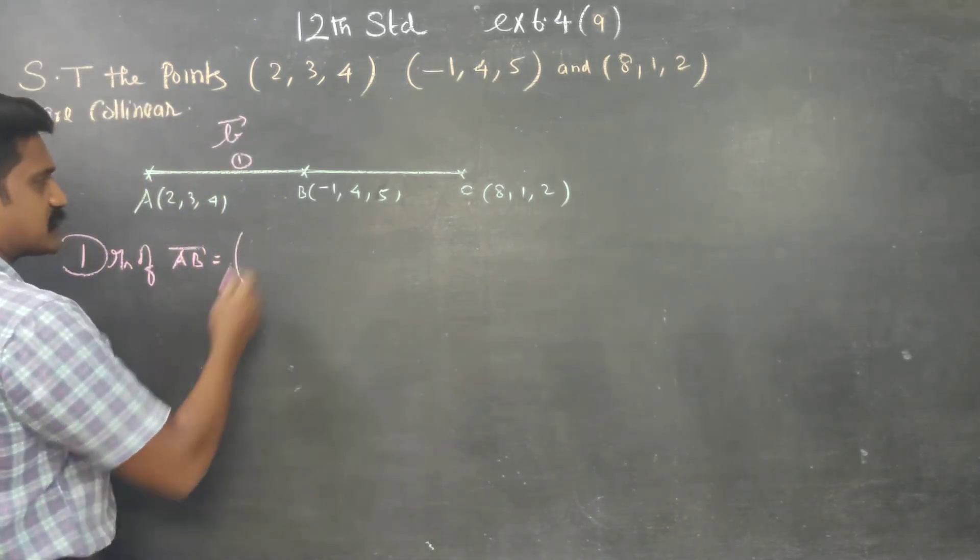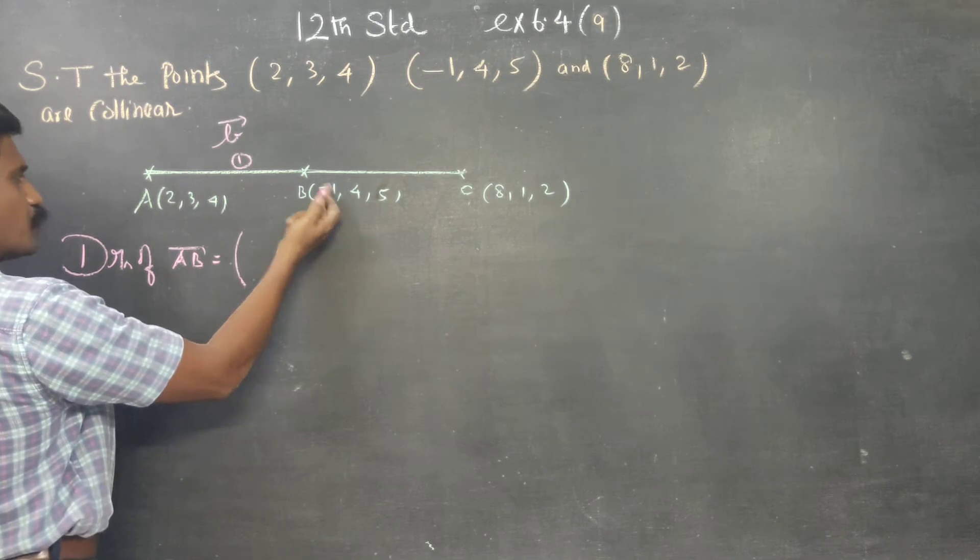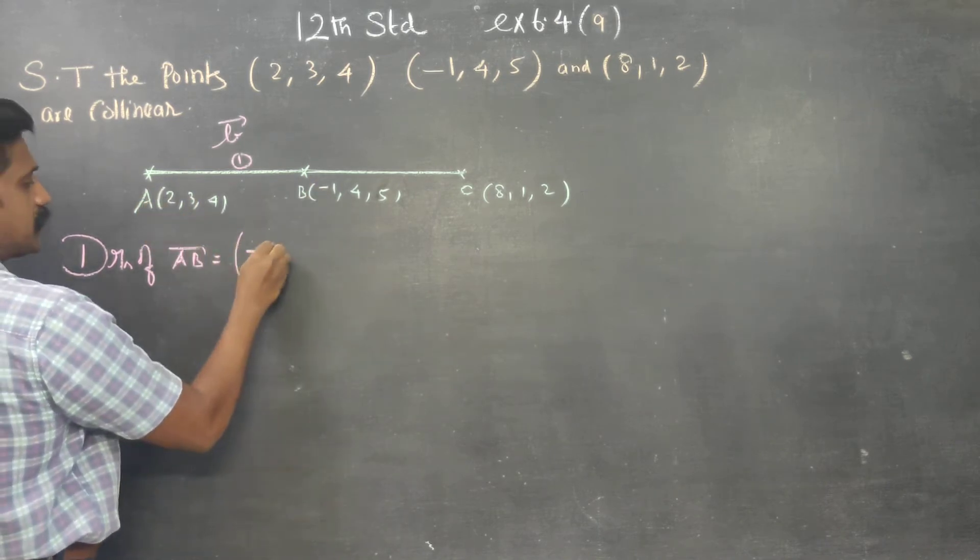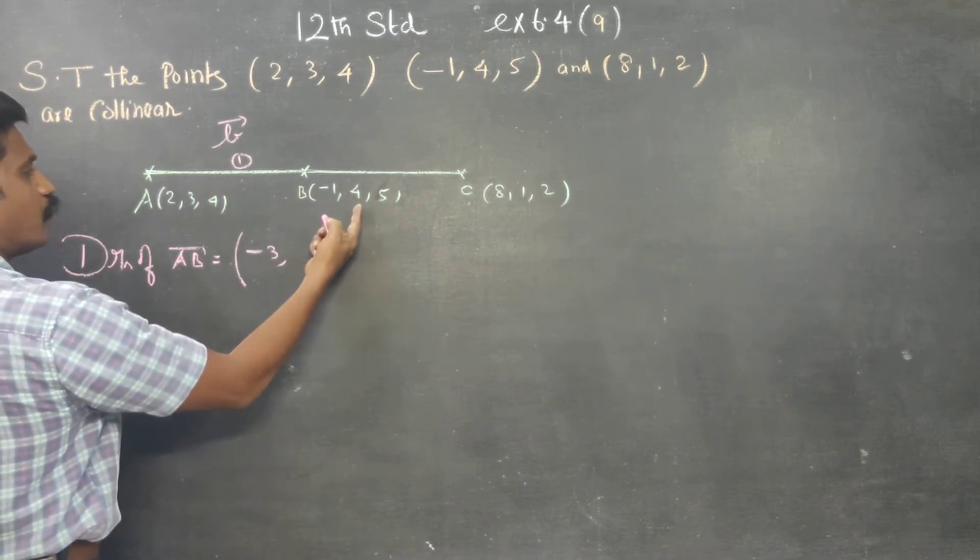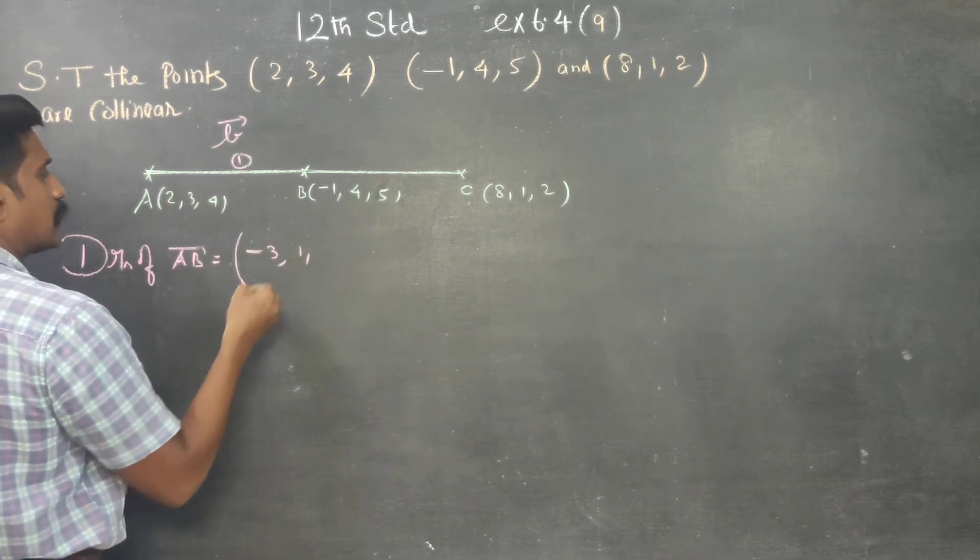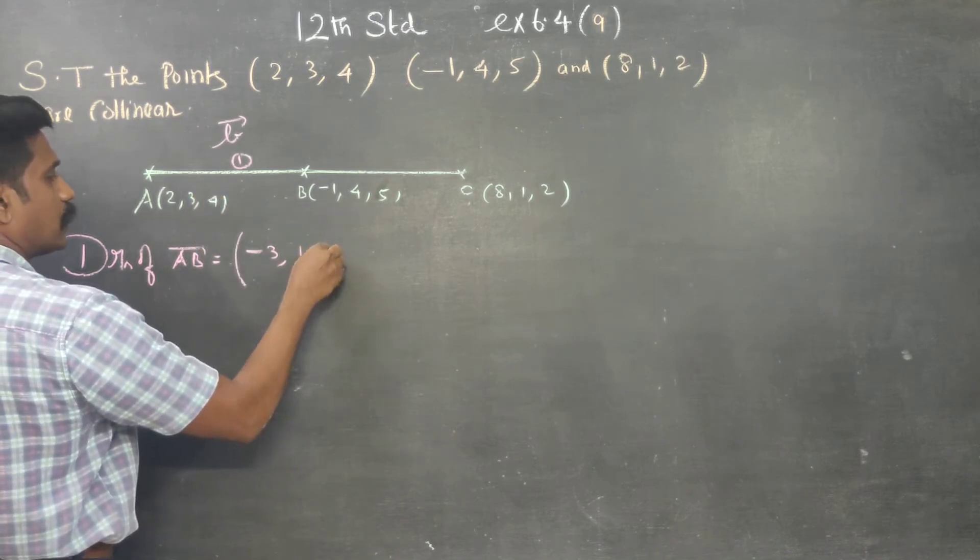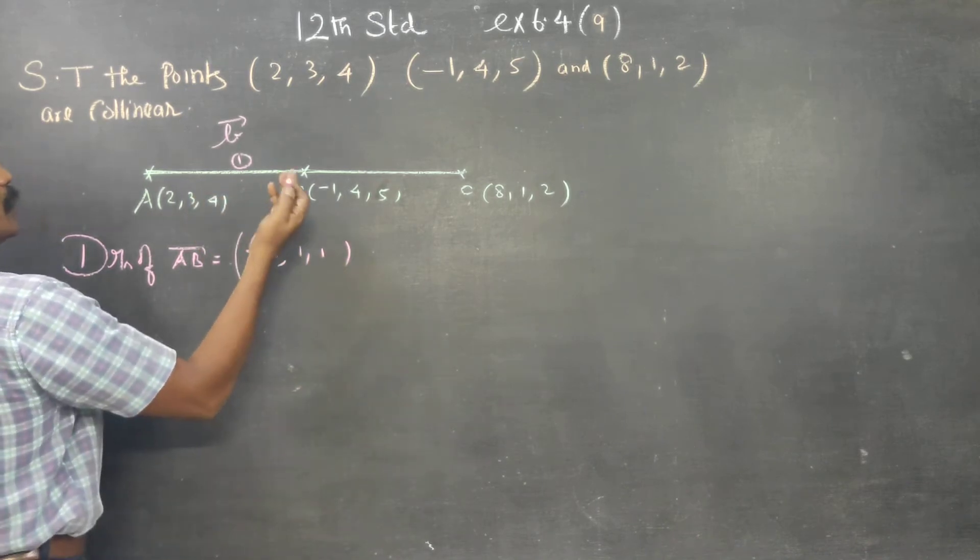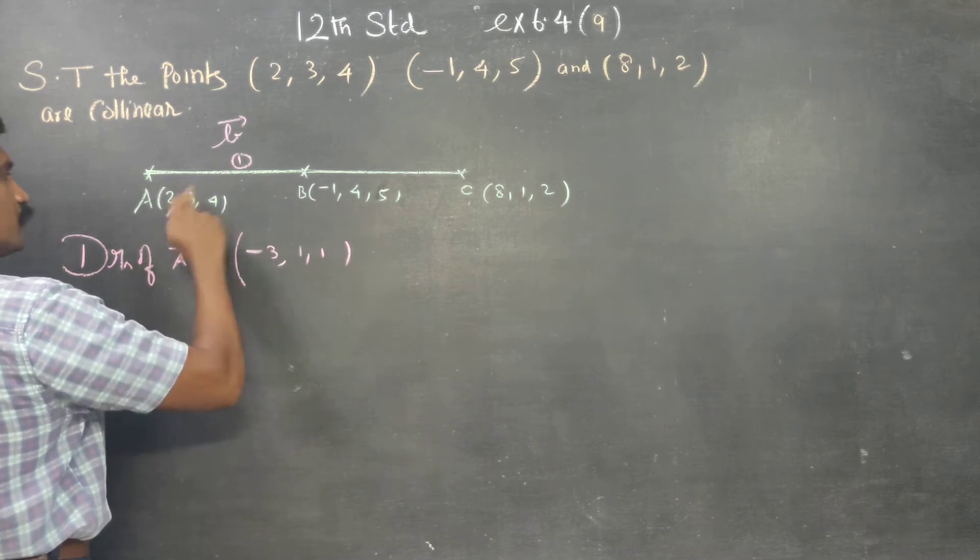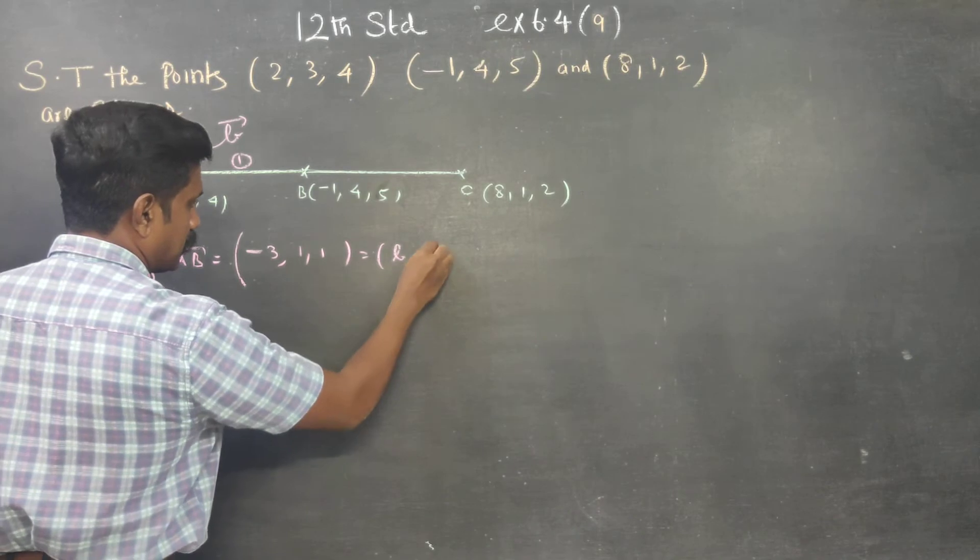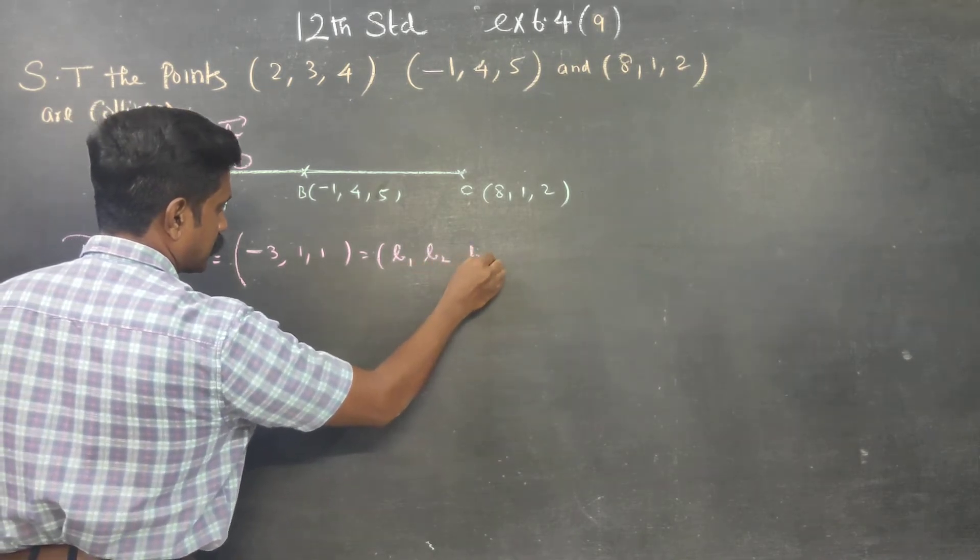I am going to find the direction ratios of AB. Direction ratios come to be just a difference. Minus 1 minus 2, 4 minus 3, 5 minus 4. So minus 3, 1, 1. This is my B1, B2, B3.